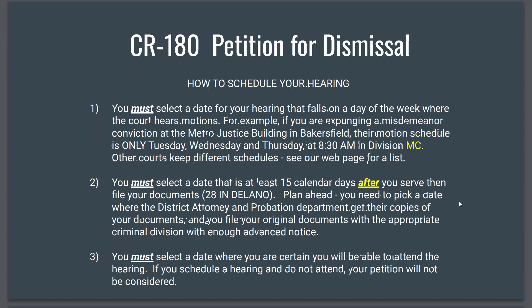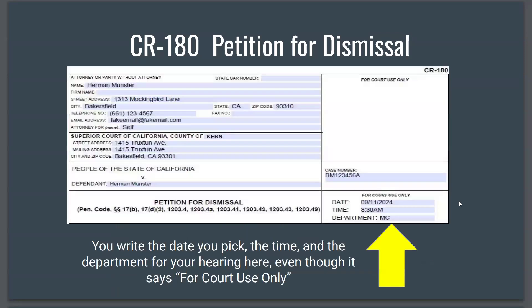The final rule is that you have to pick a date where you are certain you will be able to attend the hearing. If you schedule a hearing and you don't go, your petition will not be considered. So don't pick a date that you don't know for a fact that you can attend. Once you've picked your date, you put in the date, the time, and department.